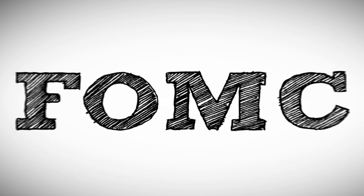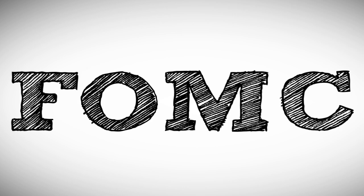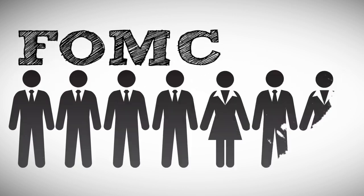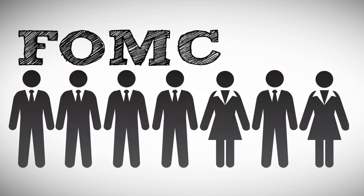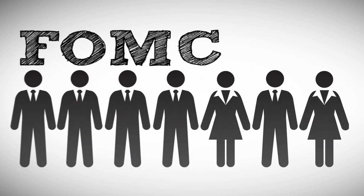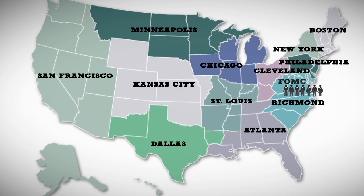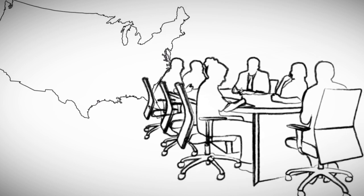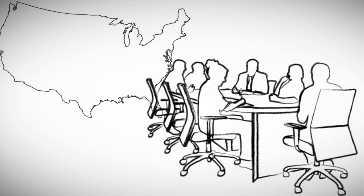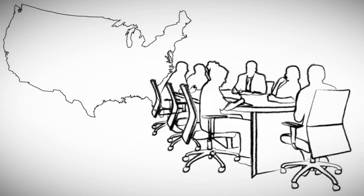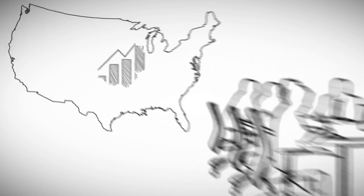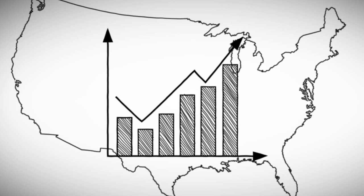Monetary policy decisions are made by the Federal Open Market Committee, or the FOMC. The members of the Federal Reserve's Board of Governors in Washington, D.C., and the presidents of the regional Federal Reserve Banks participate in the FOMC meetings, where the group discusses the nation's economic conditions and deliberates on an appropriate policy course to support a thriving U.S. economy.